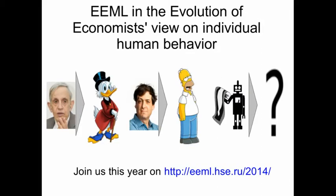This diagram simplifies the development of economists' view on individual human behavior in the last 70 years. Cold War-inspired game theory and John Nash's fundamental work strongly impacted economics and caused the creation of Homo economicus.